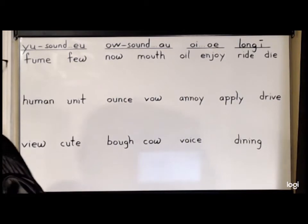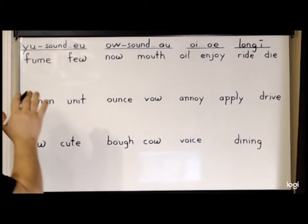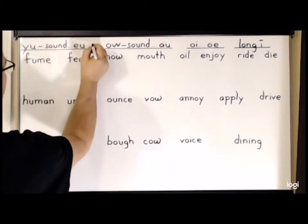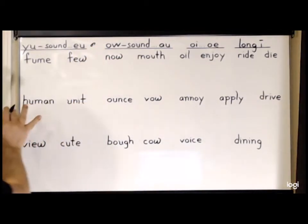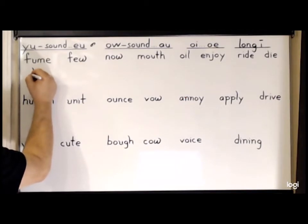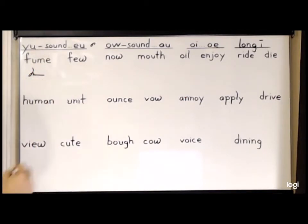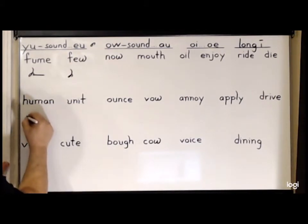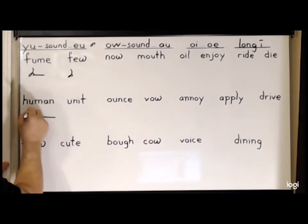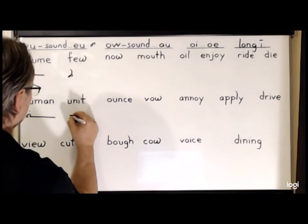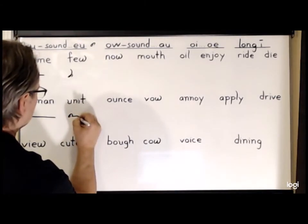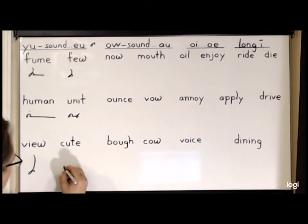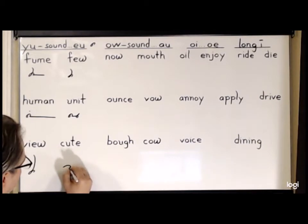Next are the diphthongs. First, we have the Y-U sound — the U sound — and we'll use the small circle E with the U hook. So in the words: 'fume' is F-E-U-M; 'few' is F-E-U; 'human' will be the circle E, the U hook, M-E-N stroke, and the H; 'unit' will be E-U-N-E-T; 'view' will be V-E-U; and finally 'cute' is K-E-U-T.